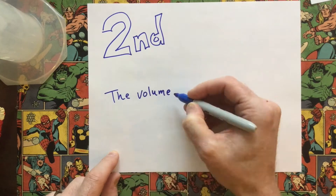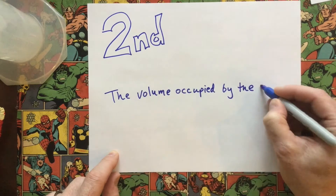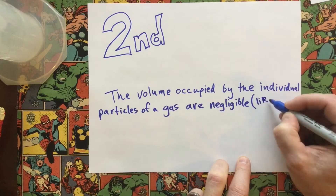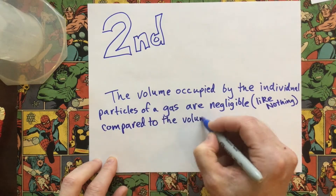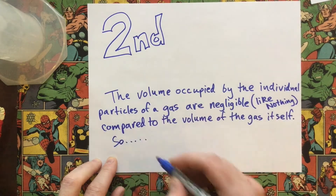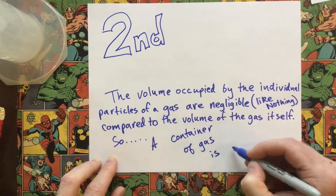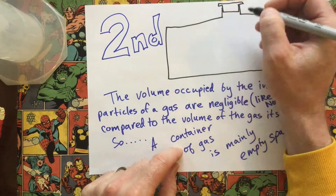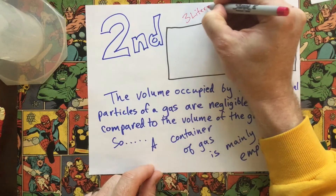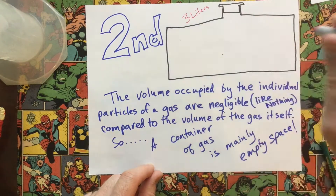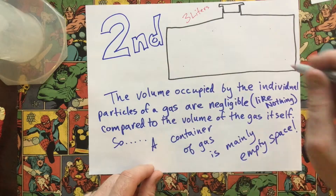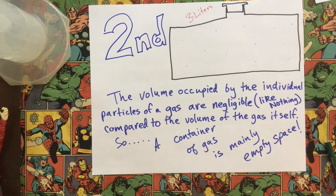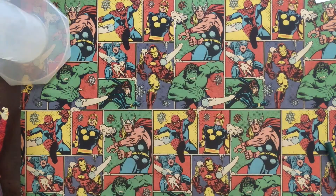Number two: the volume occupied by the individual particles of a gas are negligible — which means like nothing — compared to the volume of the gas itself. So a container of gas is mainly empty space. If you look at this picture, I've got a gas container that contains three liters of gas. When I put in those actual particles, you can barely see them — they don't take up much space at all, but the space of the overall gas is still three liters.